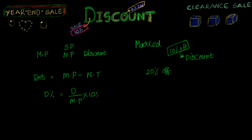Discount percentage is equal to discount divided by market price, multiplied by 100. This very clearly tells us that discount is always measured with respect to market price — the price which the customer sees on the article. So the discount is always calculated with respect to the market price.